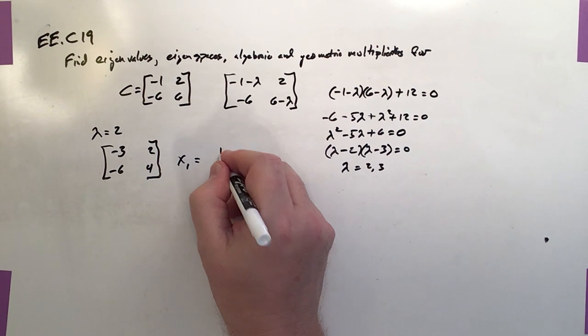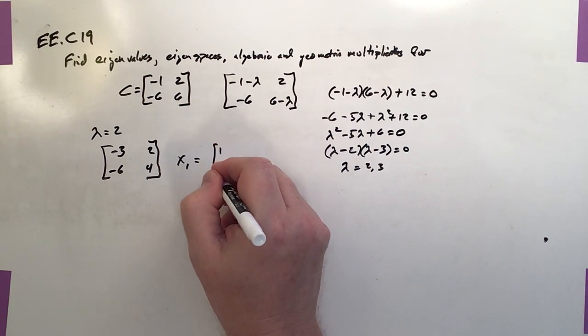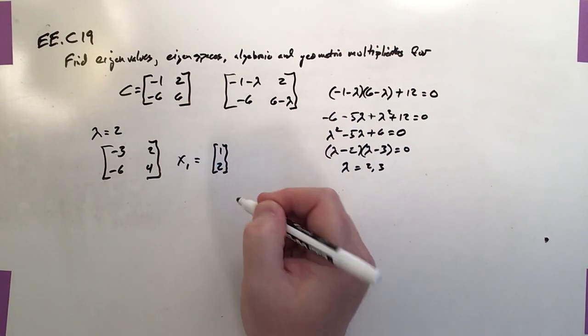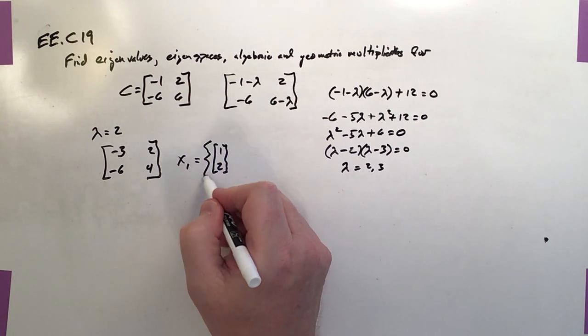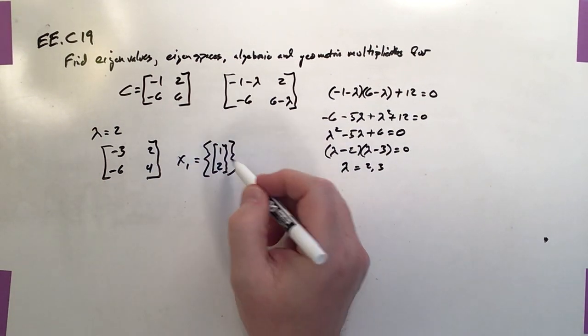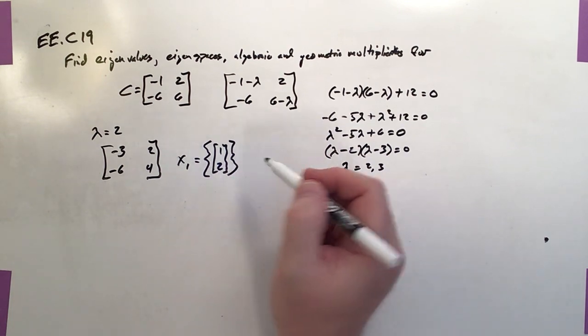So that means x1, the very first eigenvector, is going to be 1 over 2. And basically, if I use that as my vector set, then that's the eigenspace. So you can see it has a dimension of 1.